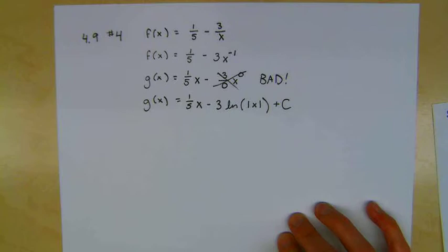So the antiderivative of 1 over x is natural log of the absolute value of x plus c. And did they give us a point? Nope, there's no point that we need, so that's it.